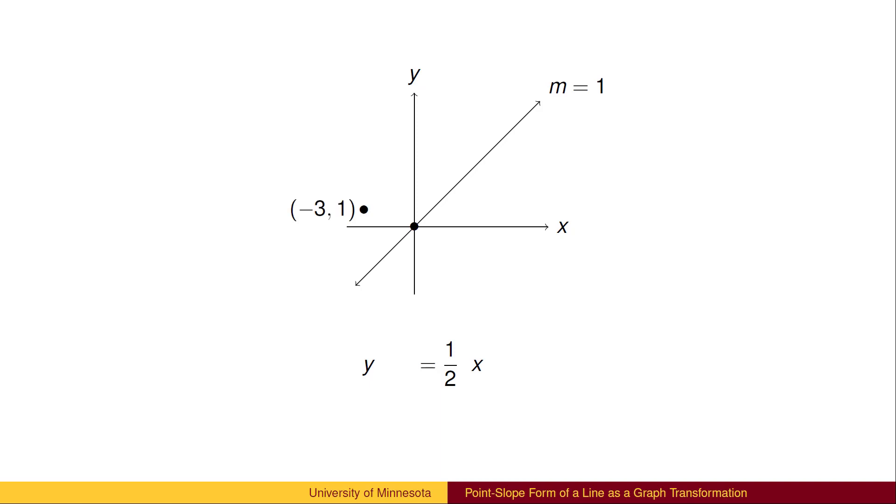Now, if we want the equation of the line with slope 1 half through the point, we start with the line y equals x, make it half as tall, move it left 3, and up 1.